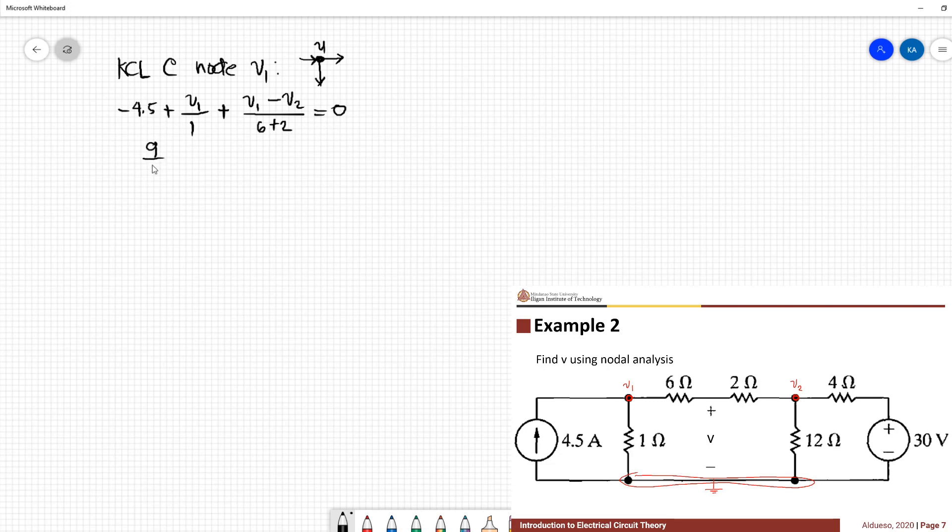9 over 8 V1 minus 1 over 8 V2 equals 4.5. We have equation 1.